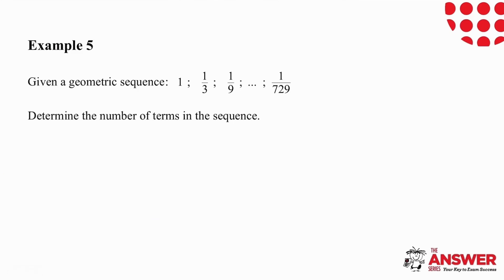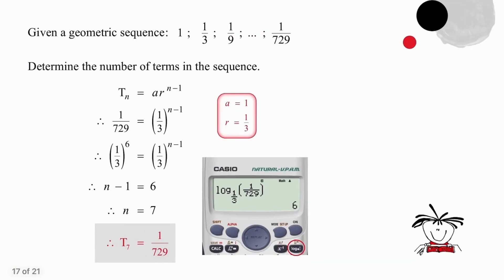Pause the video and try this question on your own. We have three terms given, so it's very easy by inspection to see that your r value here is going to be one third. We have the value of the last term and what we need to do is work out how many terms we have. So we're going to start by generating a formula. The first term is 1, so our ratio becomes everything. So we just have a ratio to the power of n minus 1 and 1 over 729.